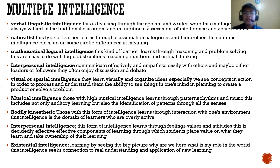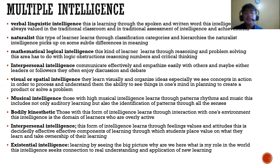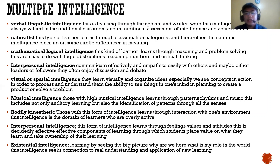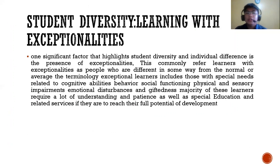Bodily-kinesthetic intelligence: those with this form of intelligence learn through interaction with their environment. This intelligence is the domain of learners who are overtly active. Intrapersonal intelligence: this form of intelligence involves learning through feelings, values, and attitudes. It is an affective component of learning through which students place value on what they learn and take ownership of their learning. For the revised version of multiple intelligence, an additional type was added — existential intelligence — learning by seeing the big picture: why we are here, what is my role in the world. This intelligence seeks connection to real understanding and application of new learning.